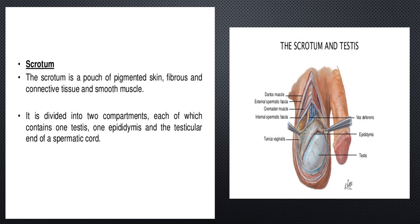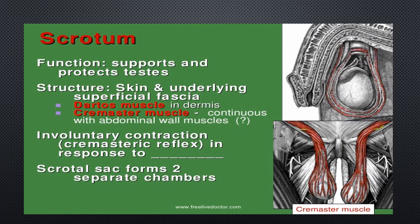The epididymis is a part of the male reproductive system of many vertebrates. The functions of the scrotum include: supporting and protecting the testes via the skin and underlying superficial fascia, the dartos muscle in the dermis, and the cremaster muscle which continues with the abdominal wall muscles.